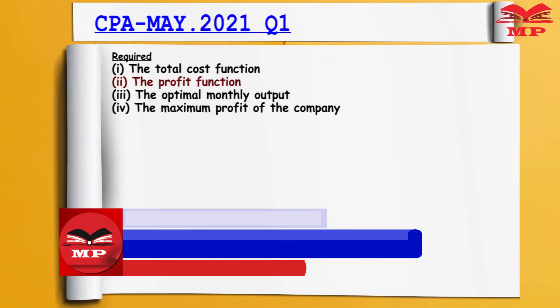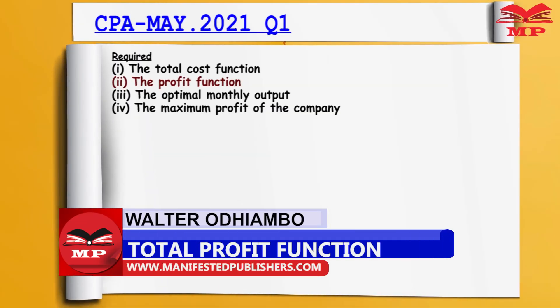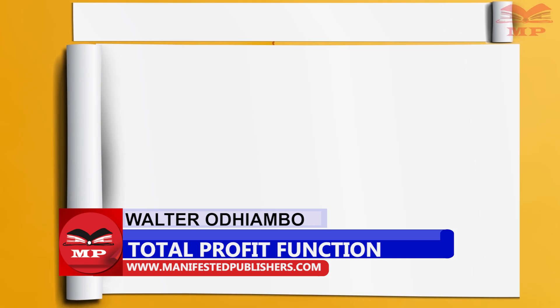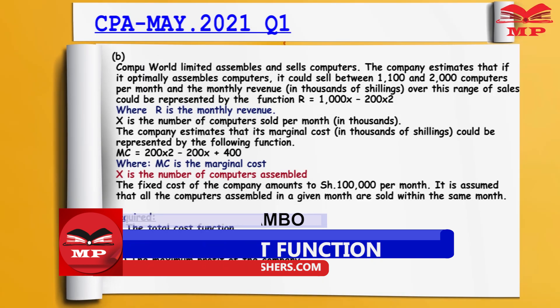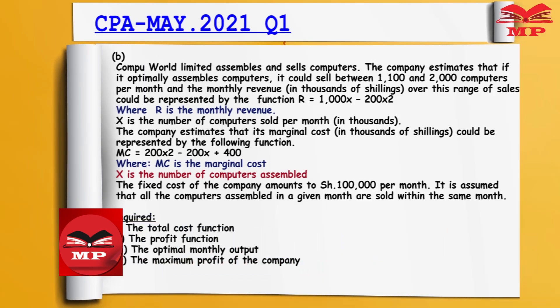The next part is the profit function. Profit is total revenue minus total cost, normally abbreviated